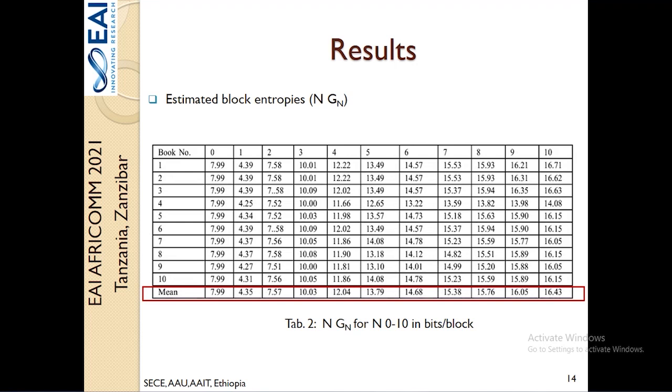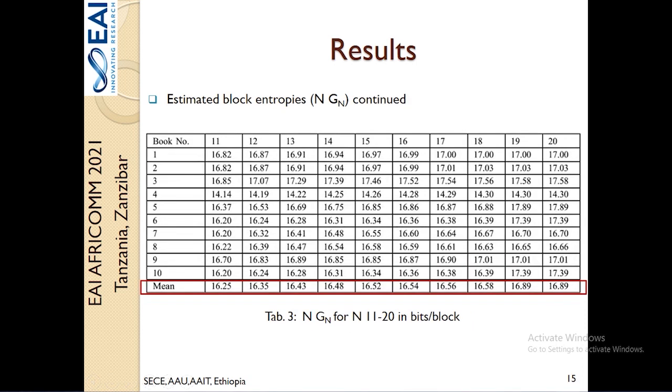Using these literatures, we estimated the block entropy of Afan Oromo, and we identified that if we model Afan Oromo with the assumption of fixed-length encoding where each symbol is equally probable, you would need around 7.99 or 8 bits. Whereas if you assume symbols are independent but they have their own probability distribution, then you would at least need 4.35 bits. When we increase the block size, the bit requirement is minimized because what you see here should be divided by the block size. For instance, for a block size of 10, you would need 1.6 bits per symbol. Then we extended this estimation up to a block size of 20, and we saw a sense of convergence starting from block 11.